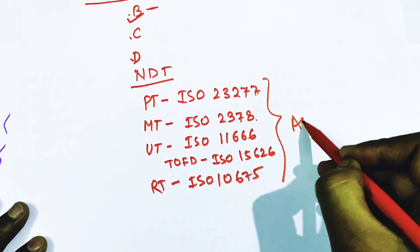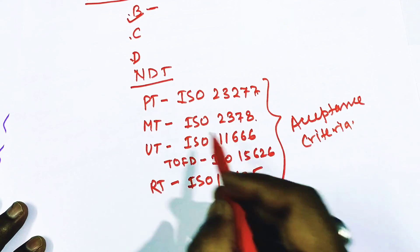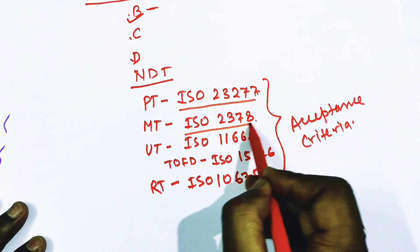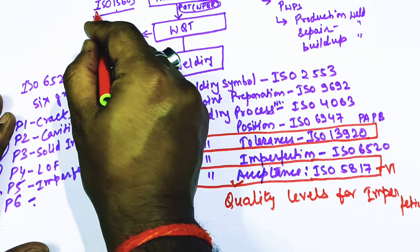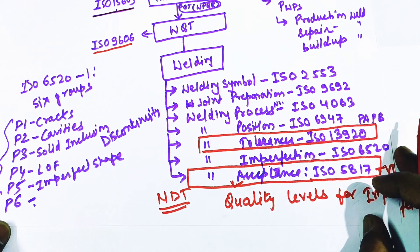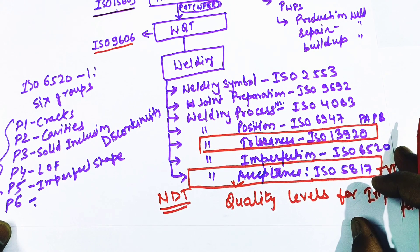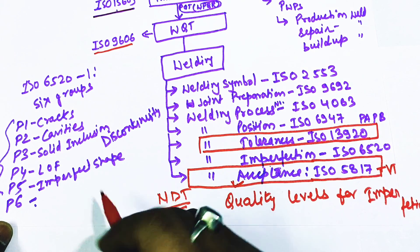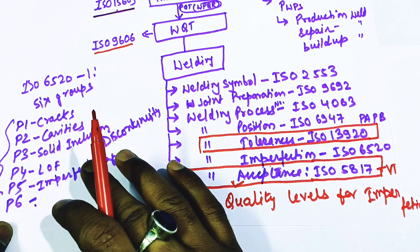These are the acceptance criteria codes for NDT methods. Today we have covered these ISO codes for welding. I hope you like this video. Please give your valuable feedback and comments so I can improve my videos, and suggest topics for further videos. If you really like this video, please hit the like button and share this video with your friends, colleagues, and on your WhatsApp and Facebook. Thank you very much.